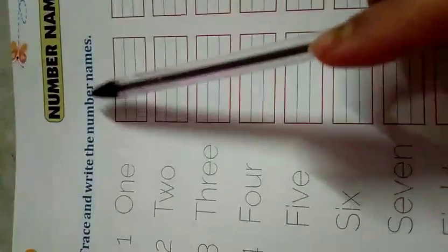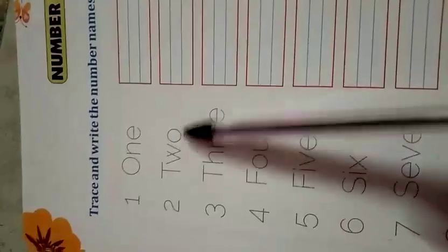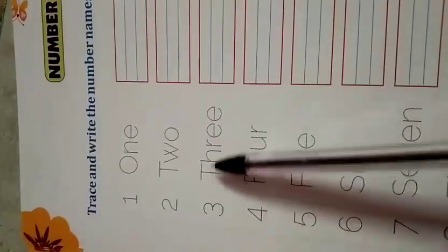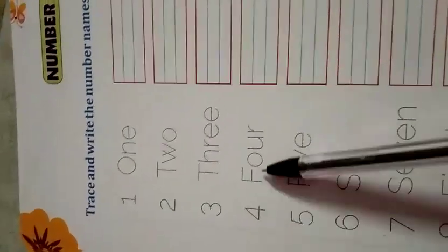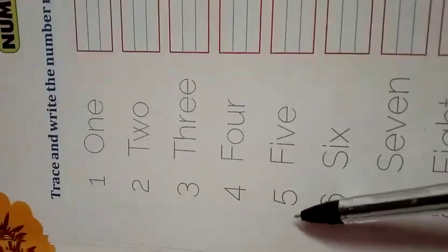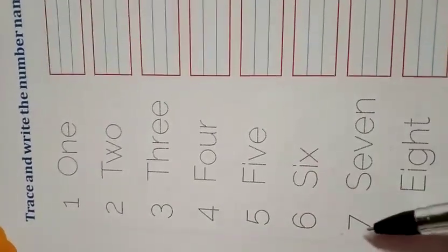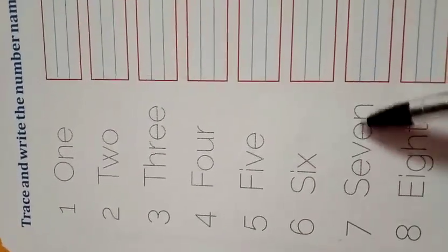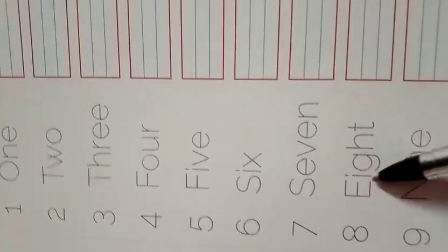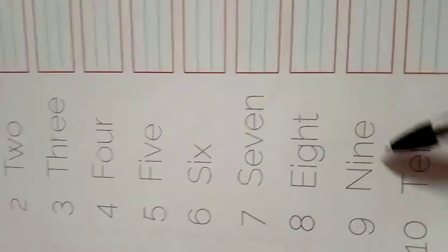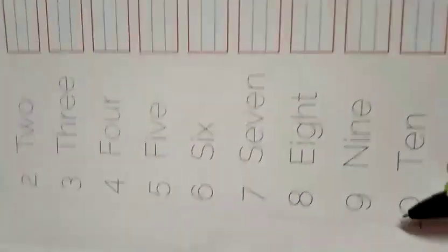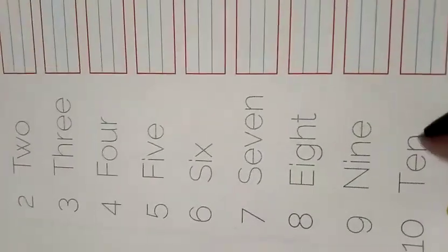Trace and write the number names: 1 - ONE, 2 - TWO, 3 - THREE, 4 - FOUR, 5 - FIVE, 6 - SIX, 7 - SEVEN, 8 - EIGHT, 9 - NINE, 10 - TEN.